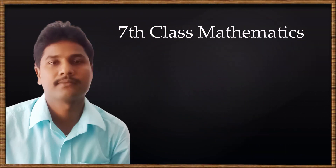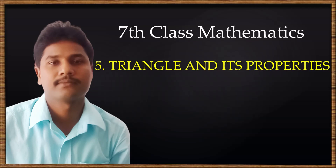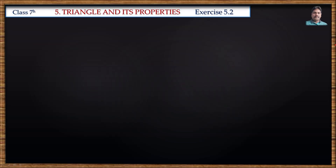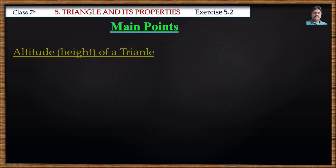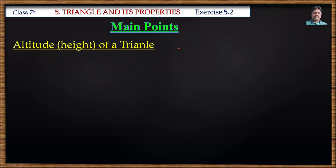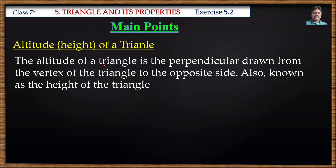Hello students, today we are going to learn seventh class mathematics, fifth chapter: Triangle and Its Properties, Exercise 5.2. Before solving Exercise 5.2, we will discuss some main points. The altitude or height of a triangle is the perpendicular drawn from the vertex of the triangle to the opposite side, also known as the height of the triangle.